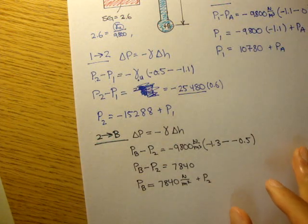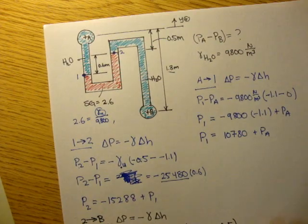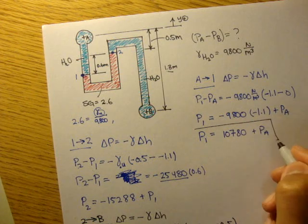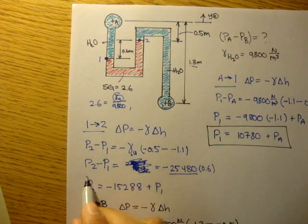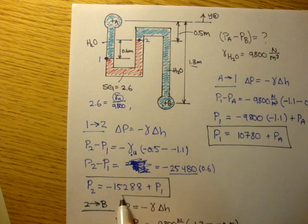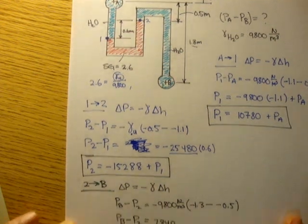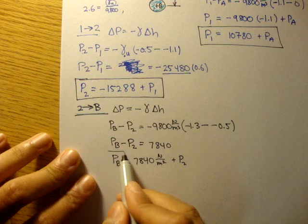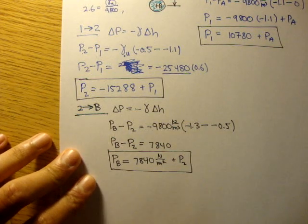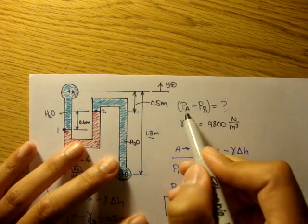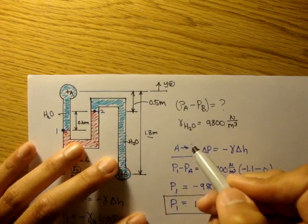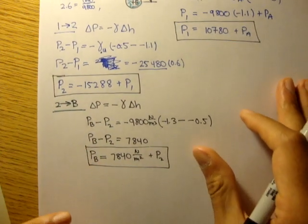Now, we have this, we have this down here, and we have this. And what they wanted in the original question is what's P_A minus P_B? What's that quantity equal to? Well, let's figure it out.